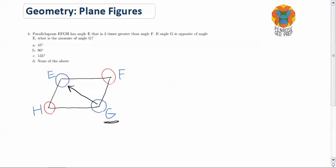So, the problem is we don't know exactly what angle F is, but we can say that angle F is x degrees. We can just assign that as the angle measurement of F. And then we know that E is 3 times greater than angle F, so we can say that E is 3x.